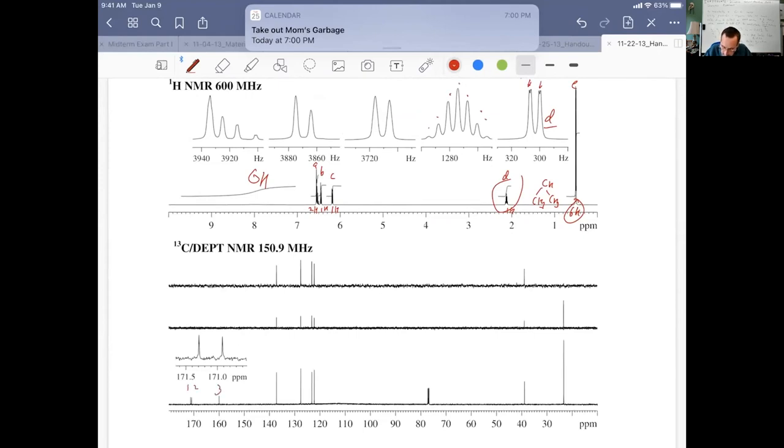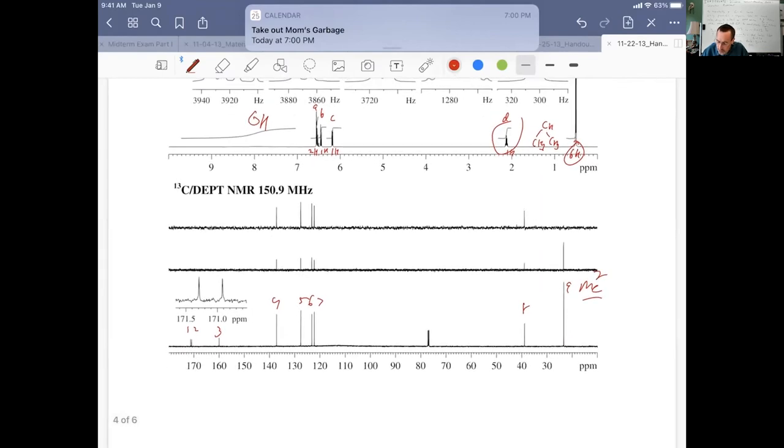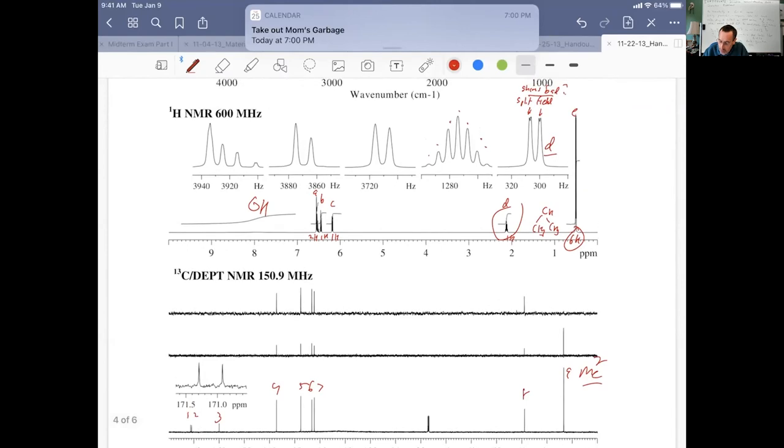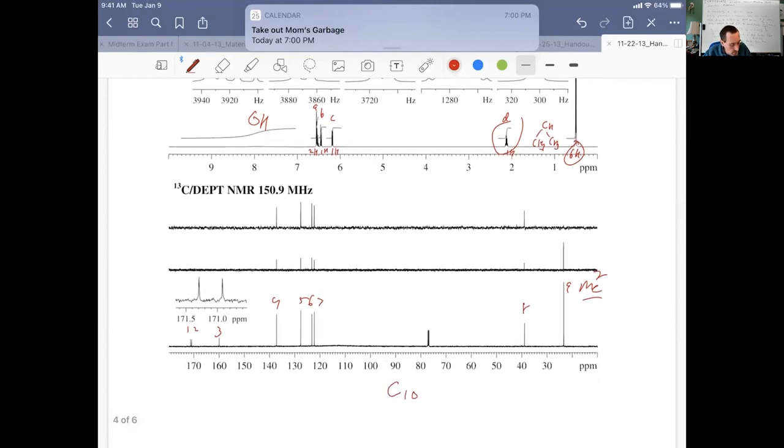We see something that looks like a septet here. It probably doesn't take too much imagination to think maybe we have an isopropyl group. Clearly with six hydrogens here, we have two methyls that are the same. If we go to the carbon NMR and try to count our way through the carbons, we get one, two, three, four, five, six, seven, eight, nine. This is a methyl group here. And I've already said that we have six hydrogens. So it's got to be two methyl groups.